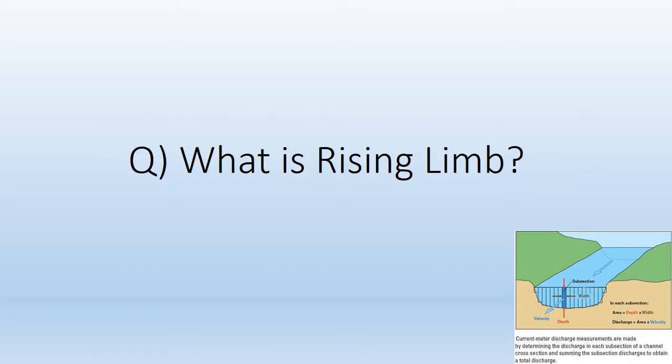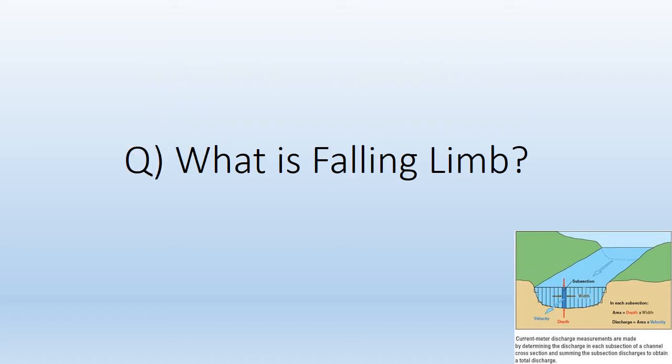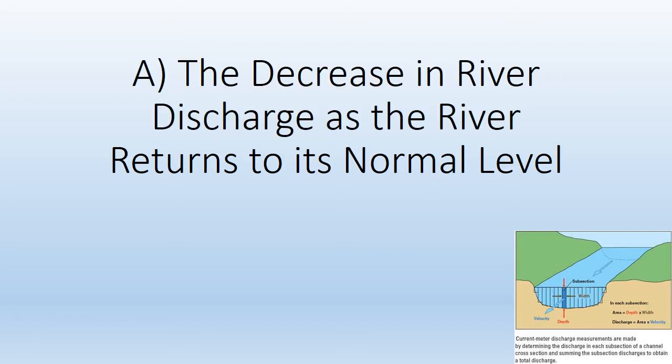What is rising limb? The increase in river discharge as rainwater flows into the river. What is falling limb? The decrease in river discharge as the river returns to its normal level.